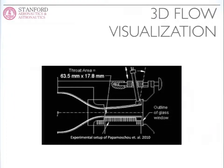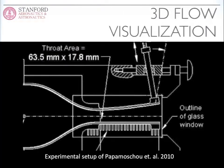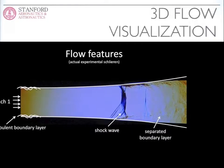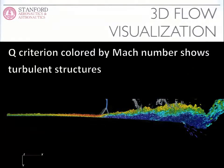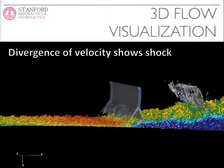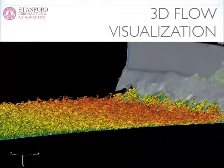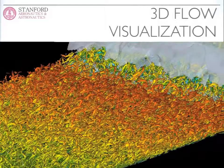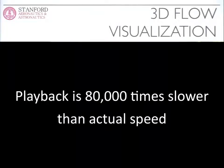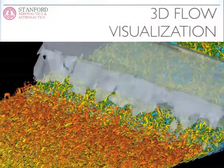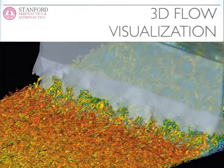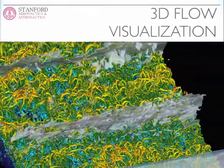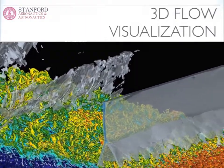This picture is best visualized in movie form. This is the experimental geometry of Papamoshko et al. at UC Irvine, and here's the experimental Schlieren of the divergent section of the nozzle. The three-dimensional simulation data is visualized using the Q criterion, which isolates the eddies of the vortical structure and the turbulent boundary layer, while the shock wave is visualized by taking the divergence of the velocity field. This is 80,000 times slower than real time. We see convective eddies accelerating down the nozzle passing through the shock wave, with the mean shock position effectively stationary, and downstream there's a broadening of scales, the boundary layer lifts from the wall, and there are subsequent reflected shock waves and expansion waves.